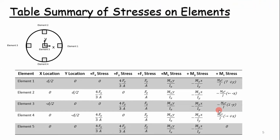Once we've laid out our distribution, we can go element by element and write down our equations, or tabulate them in a table as shown here. This is no different than our solid square shaft — we've just updated the shear stress equations and the torsional equations, and included diameter in place of side length, as shown here.